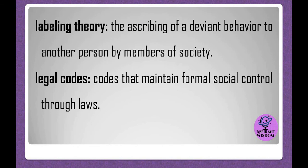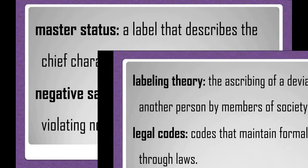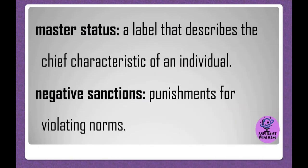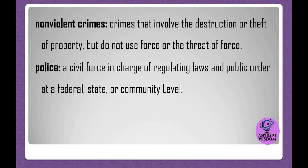Labeling theory: the ascribing of a deviant behavior to another person by members of society. Legal codes: codes that maintain formal social control through laws. Master status: a label that describes the chief characteristic of an individual. Negative sanctions: punishments for violating norms. Nonviolent crimes: crimes that involve the destruction or theft of property, but do not use force or the threat of force.